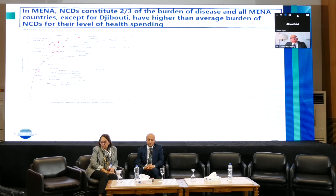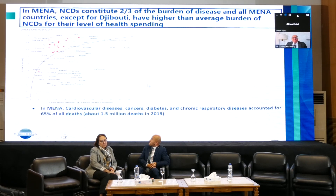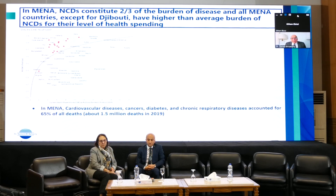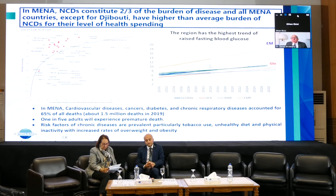In MENA, NCDs constitute two-thirds of the burden of disease, and all MENA countries except Djibouti have a higher prevalence of NCDs relative to their level of health spending. Almost all MENA countries are depicted with red dots above the trend line. Cardiovascular diseases, cancers, diabetes, and chronic respiratory diseases accounted for 65% of all deaths — about 1.5 million deaths in 2019. One in five adults will experience premature death. Risk factors including tobacco use, unhealthy diet, and physical inactivity are prevalent, and the region has the highest trend of raised fasting blood glucose.